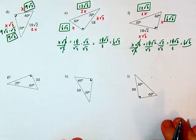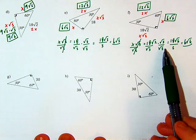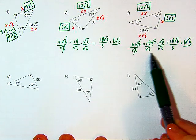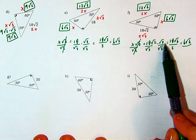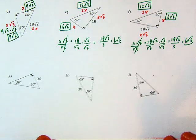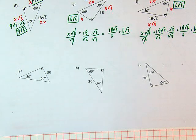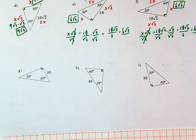It doesn't matter which way you solve it. The key mechanic is that we're taking a third of the original value and then multiplying by the square root of 3. I'd like you to pause the video and try the final three on your own. When you're ready, unpause and I'll go over them.